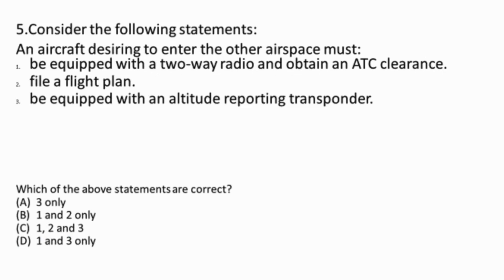Question 5: An aircraft desiring to enter the other airspace must: one, be equipped with a two-way radio and obtain an ATC clearance; two, file a flight plan; three, be equipped with an altitude reporting transponder. This question was dropped by UPSC as it was not specific. IFR flights are not subject to air traffic control clearances or two-way radio communication requirements in uncontrolled airspace class F and G. This question is based on airspace classification, carriage of transponder, and flight plan requirements.